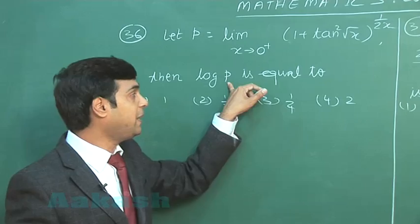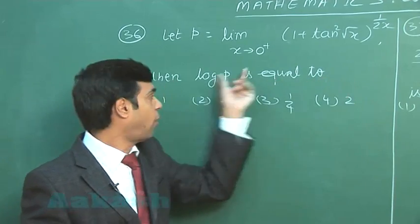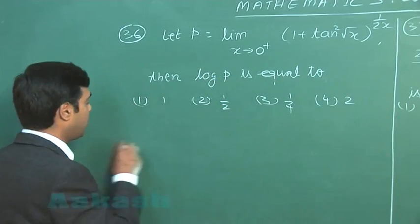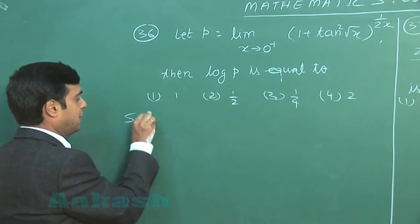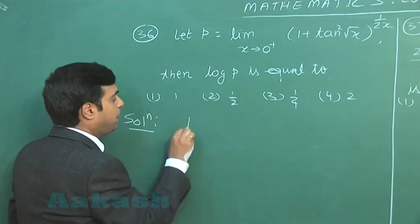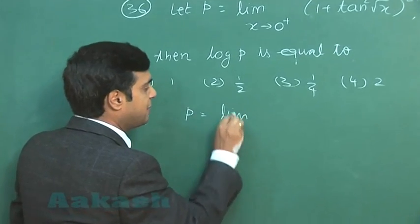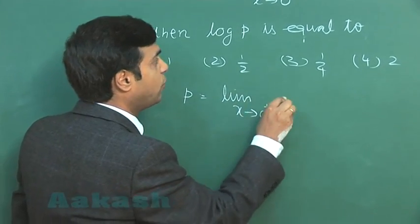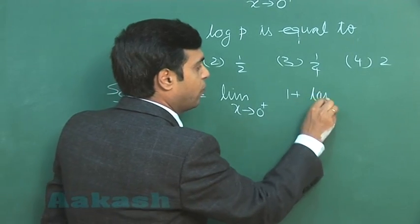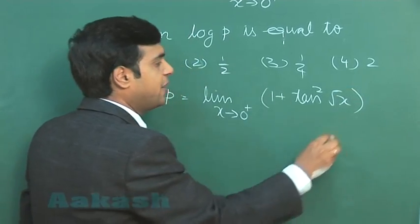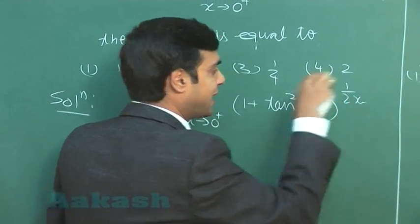Then log p is equal to log p, that is the natural log they are talking about. So let us start this one. p equals limit x approaching 0 plus (1 + tan√x) raised to the power 1 by 2x.